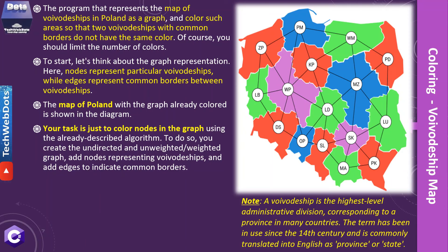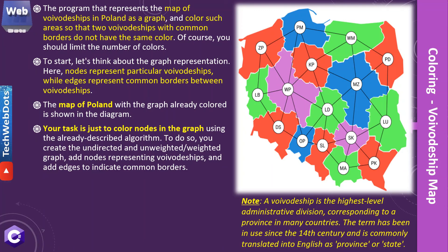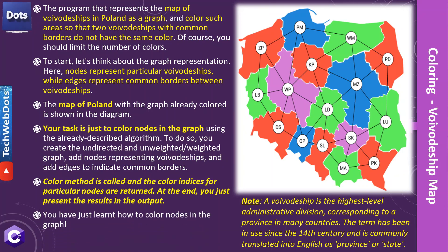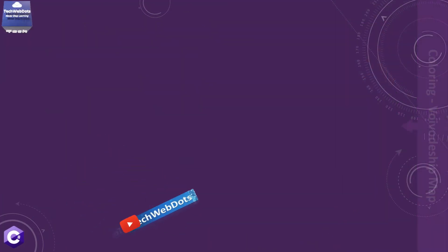Your task is simply to color nodes in the graph using the algorithm we just discussed and implemented. To do so, create an undirected unweighted or weighted graph according to the situation, with nodes representing voivodeships and edges indicating common borders. The color method is called and color indices for particular nodes are returned — as we just saw. At the end you present the result in the output form shown in the computer memory representation.